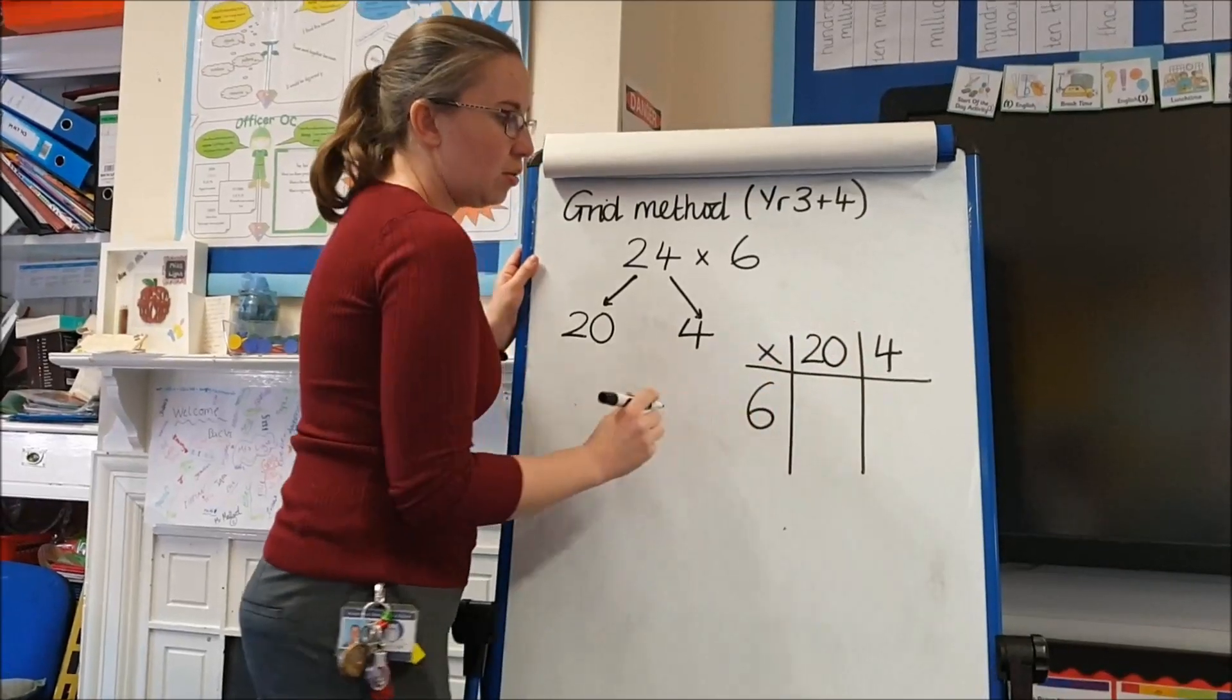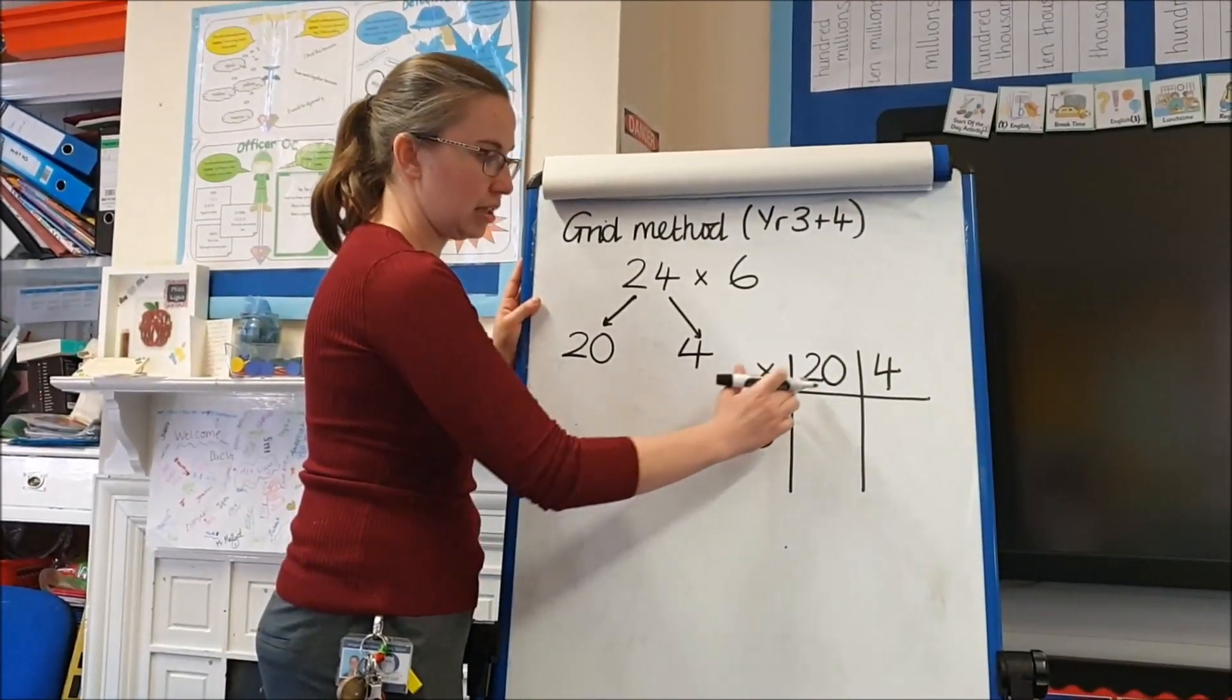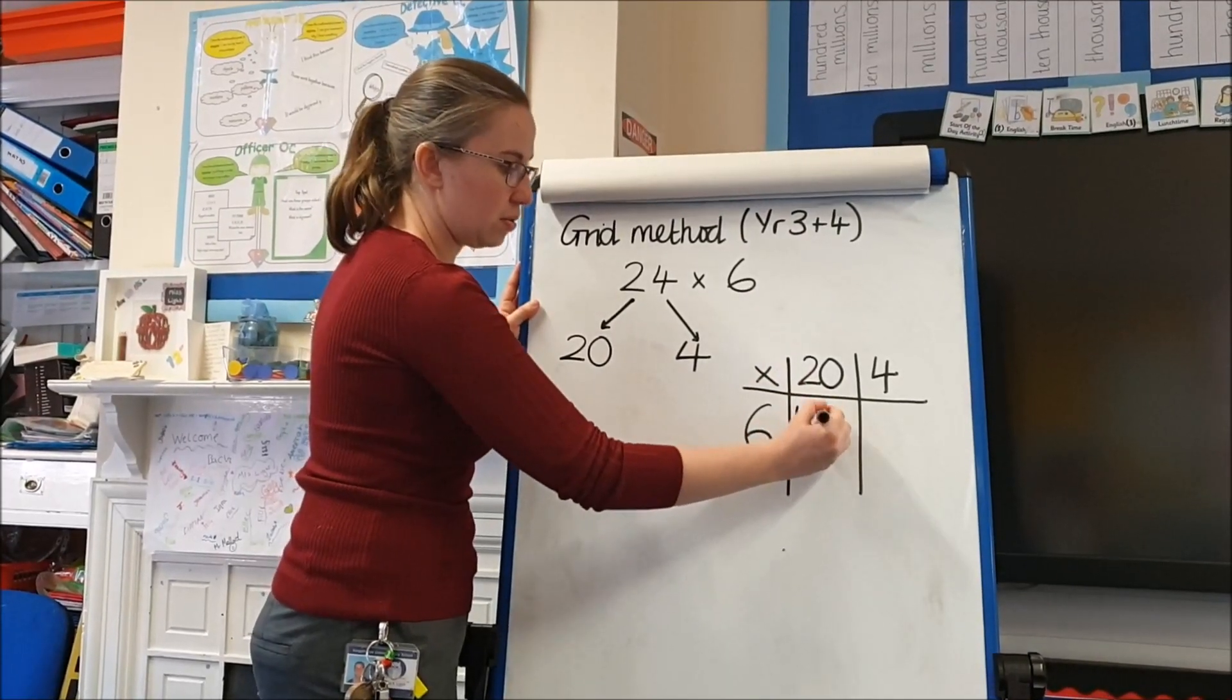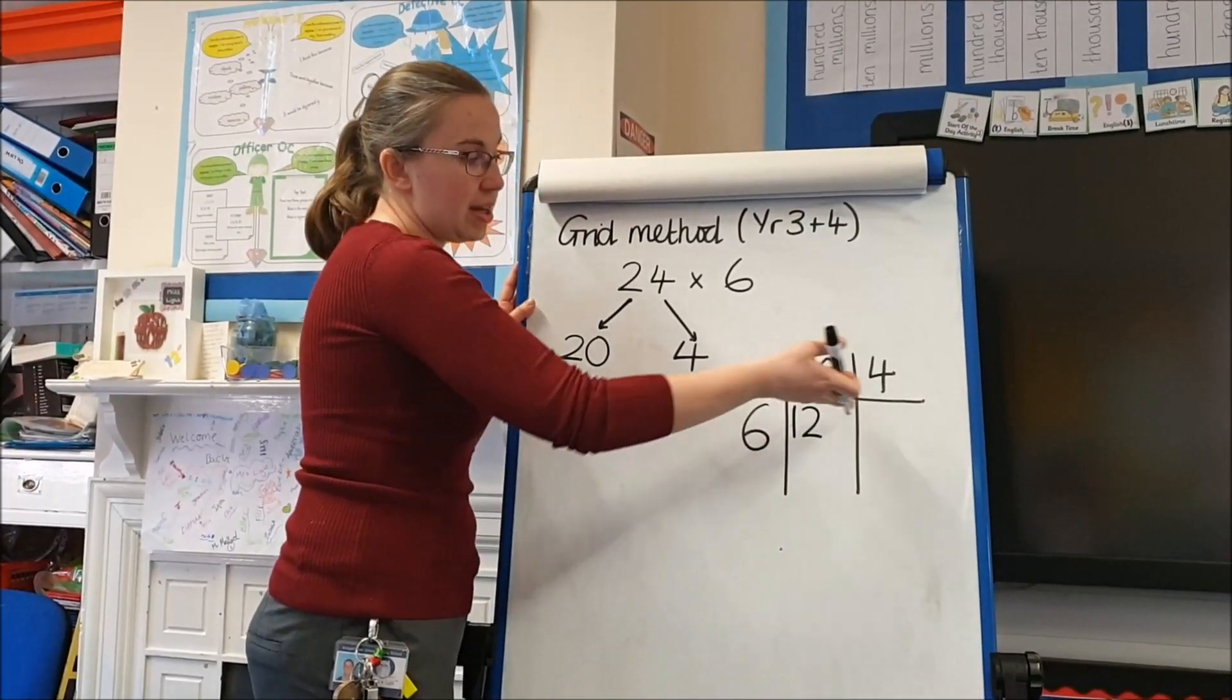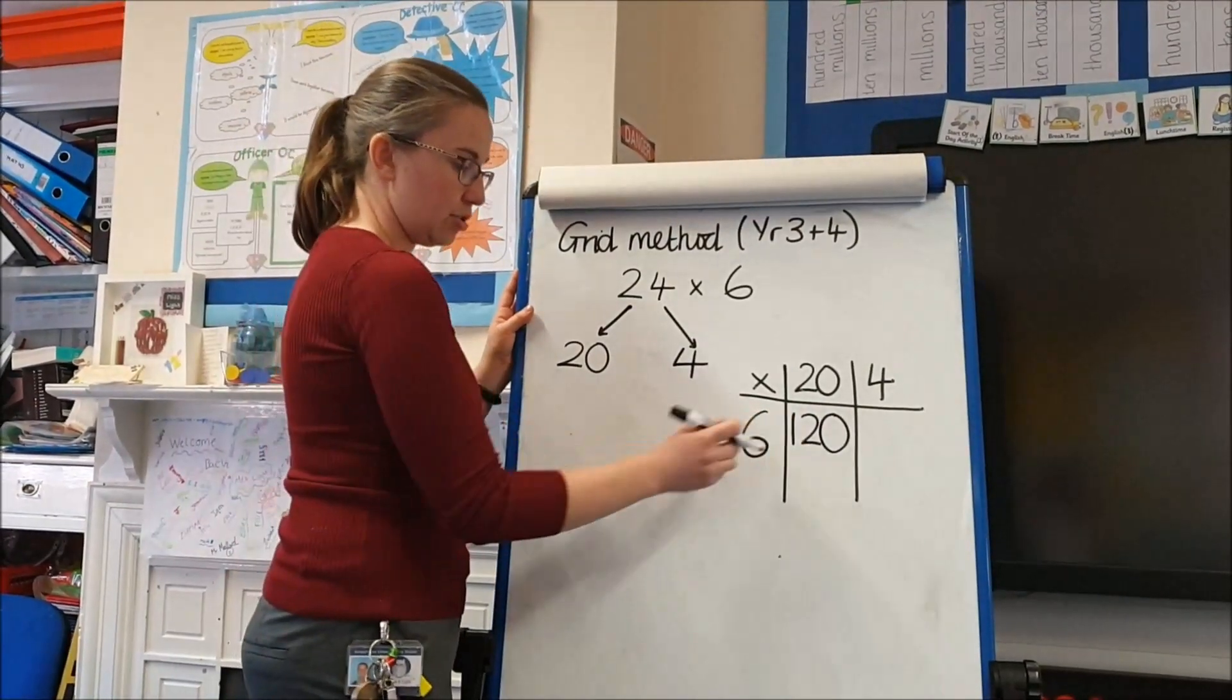So 6 times 20, we're going to use the idea of trailing 0, so we can use our multiplication factor of 6 times 2, which is 12, and then because 20 is 10 times bigger, my answer will also be 10 times bigger, meaning 120.